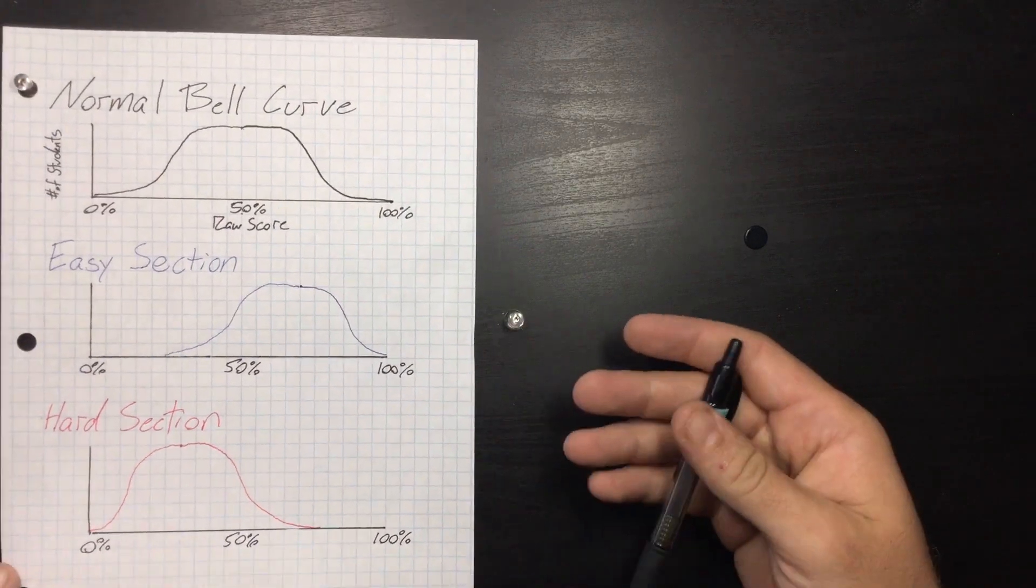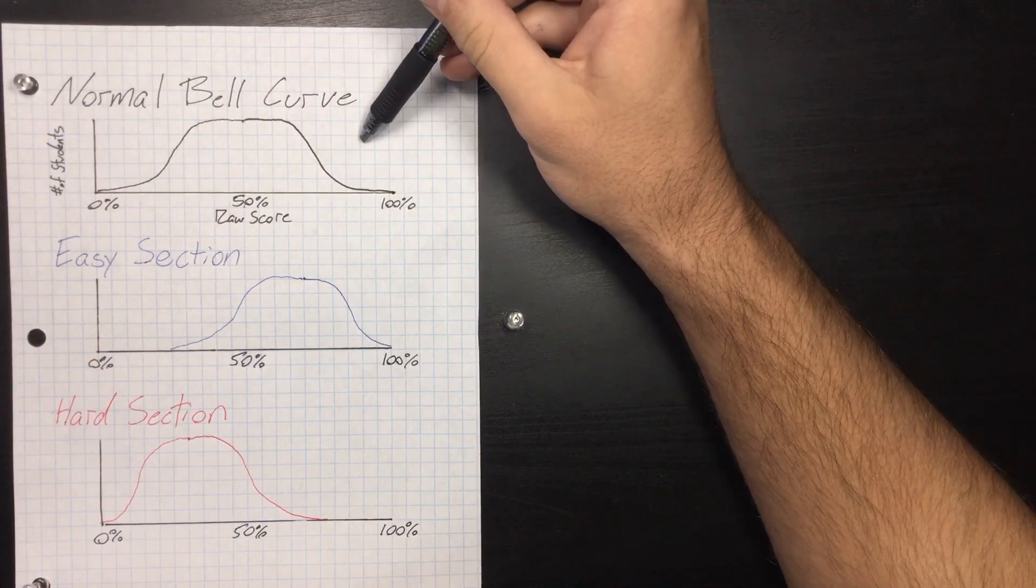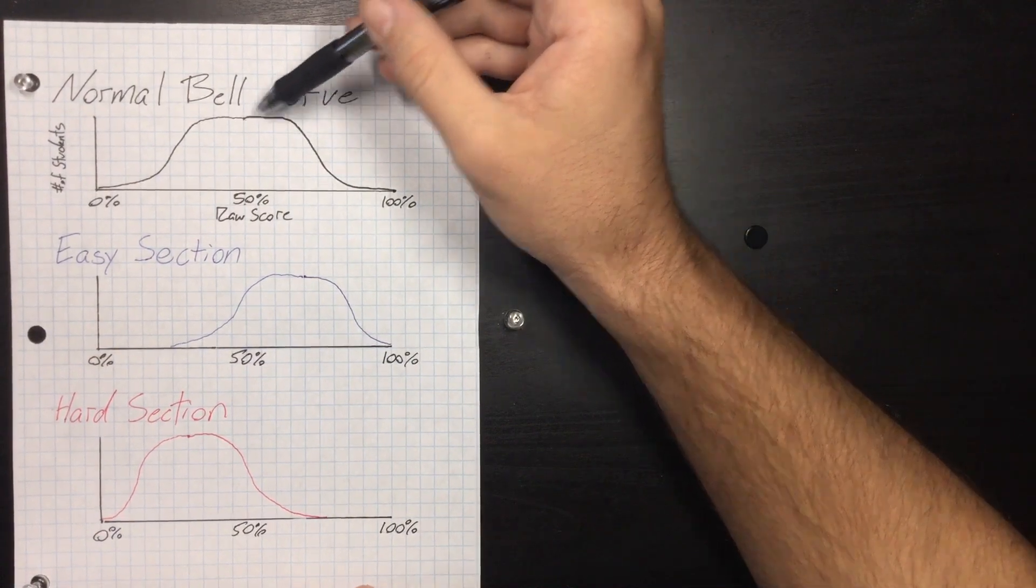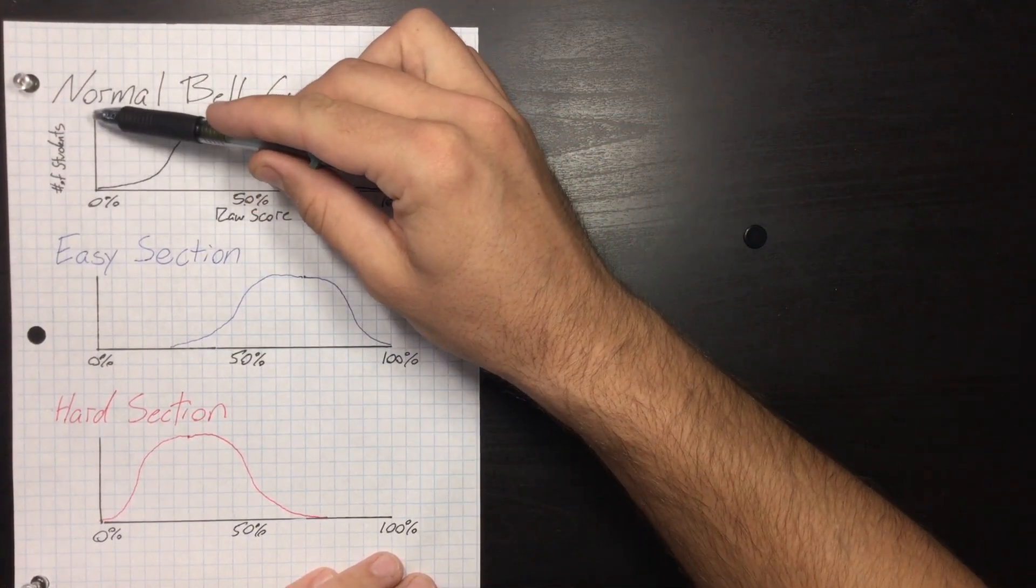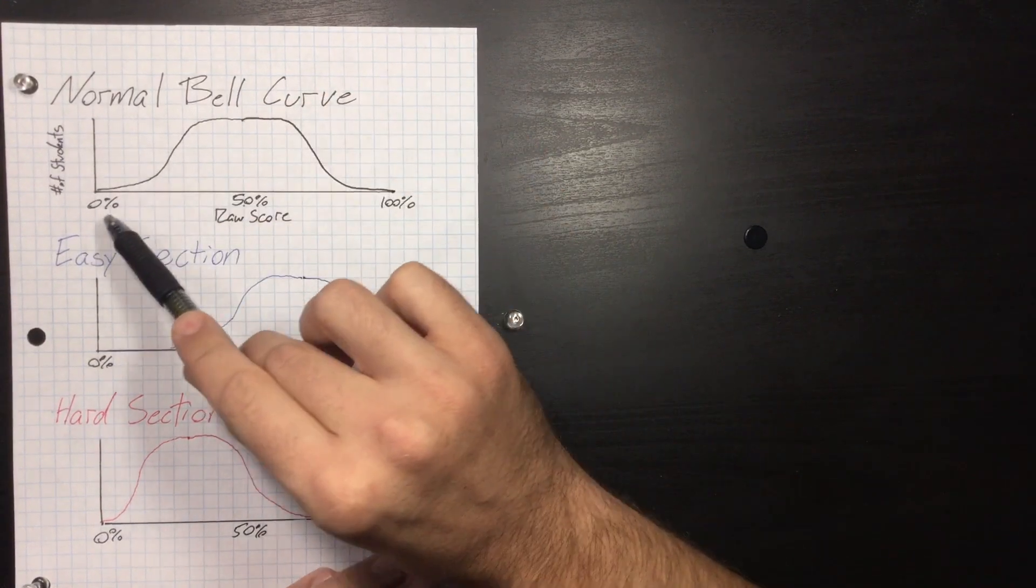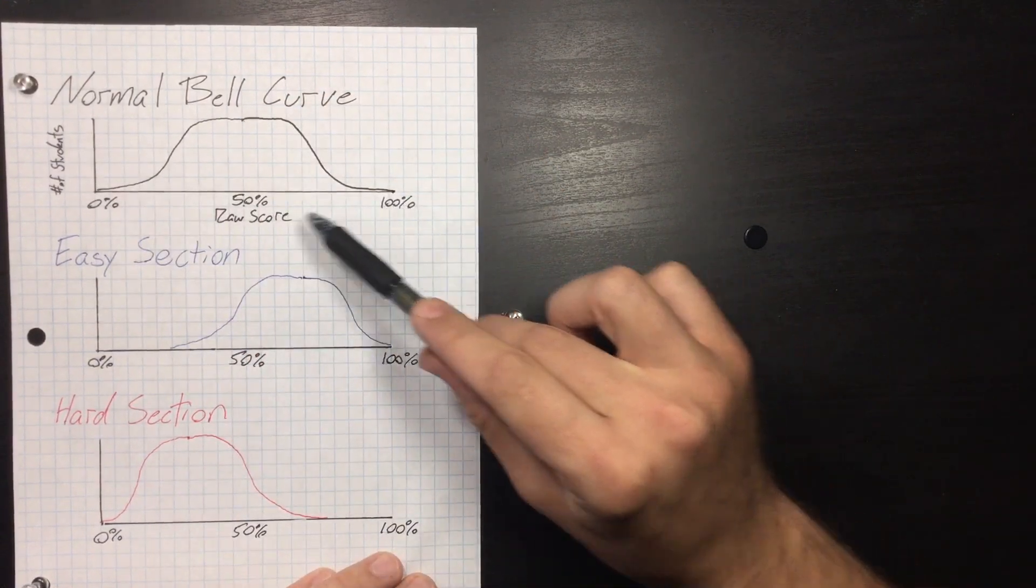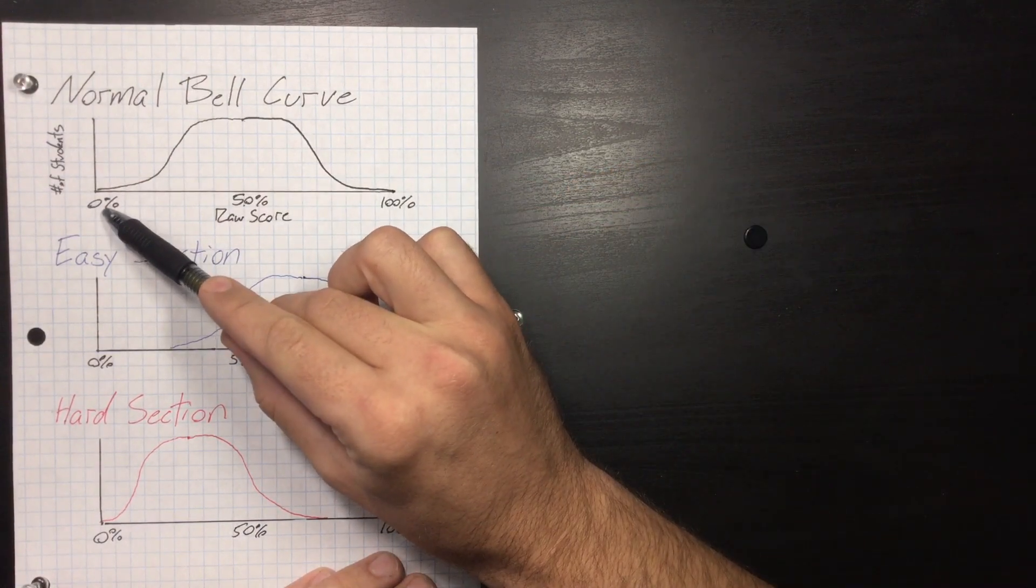First thing you got to learn is what a normal bell curve is. So this top bell curve is a classic bell curve, right? So up here, we're measuring the number of students. Up here is a lot of students, and down here is not that many students. And then here we're measuring their raw score. This would be a 50%, this would be a 47 out of 47, and this would be a zero out of 47.